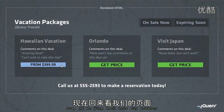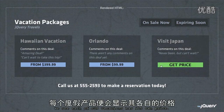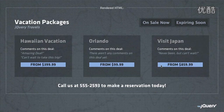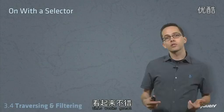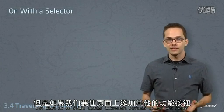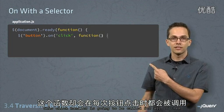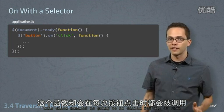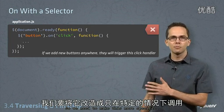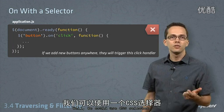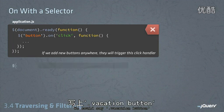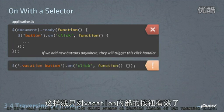Now if we jump back into our browser, when we click 'Get Price' we see that each of our vacations has its own price. This works great, but what if we start adding different buttons to our web page? This click handler is going to be called for all of them, so we need to make this more specific. We could use a CSS selector — dot vacation button — so it's only going to listen for click events on buttons inside of our vacation class.